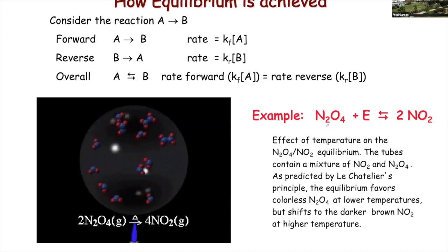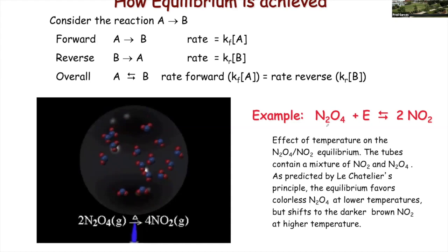As we increase the temperature, the equilibrium shifts to the formation of additional NO2 molecules. We have an equilibrium process, but we can control it by changing the temperature, the concentrations of the chemicals, or the pressure for a gas. We have a way of increasing efficiency if we control certain parameters — that's why equilibrium is such an important topic.